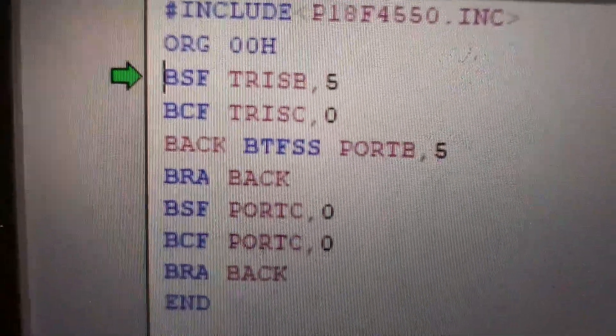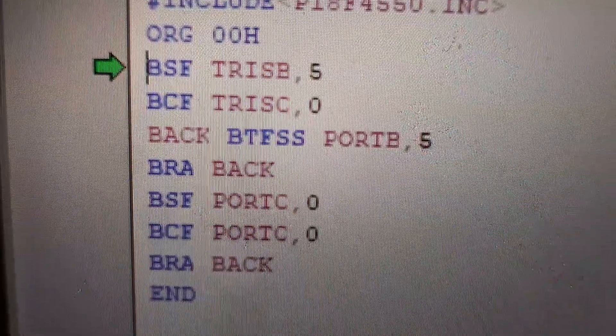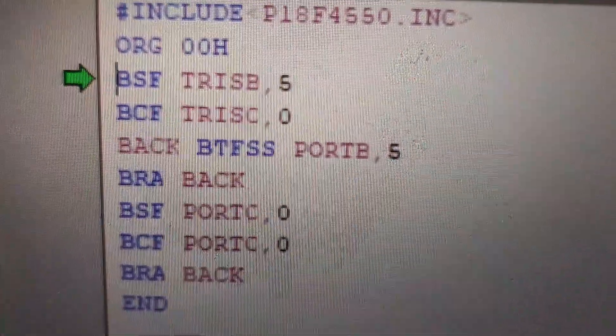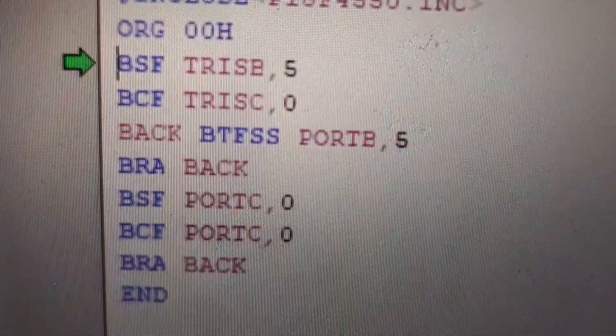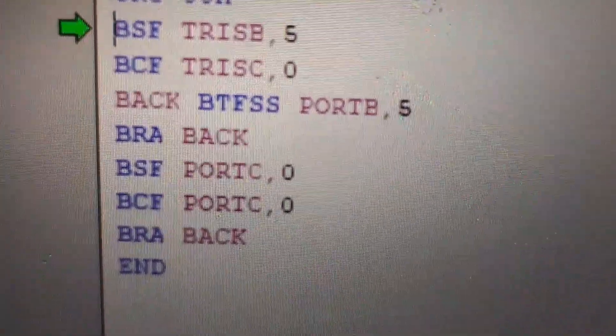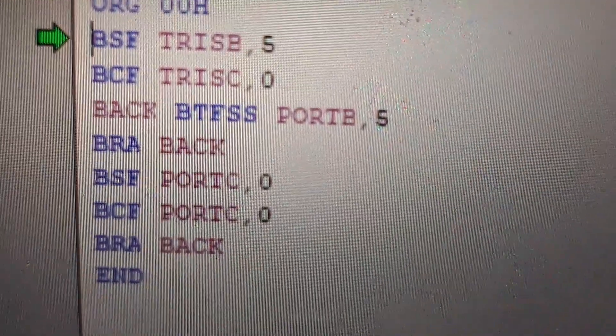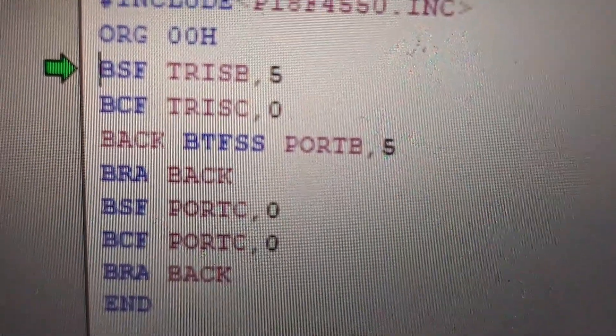Then we keep monitoring the fifth pin of port B, and if it is high then a high to low pulse will be sent to the 0 pin of port C to turn on the buzzer. Let's see how it works now.